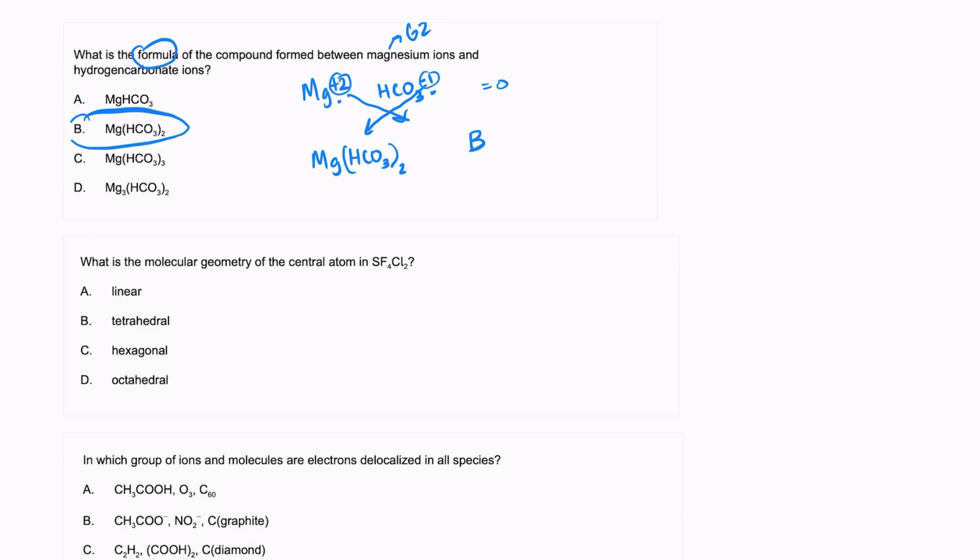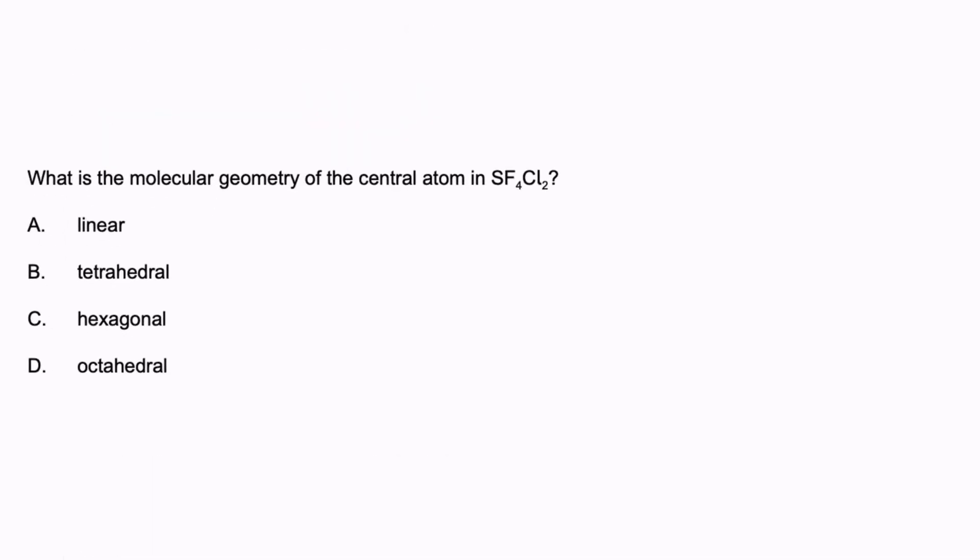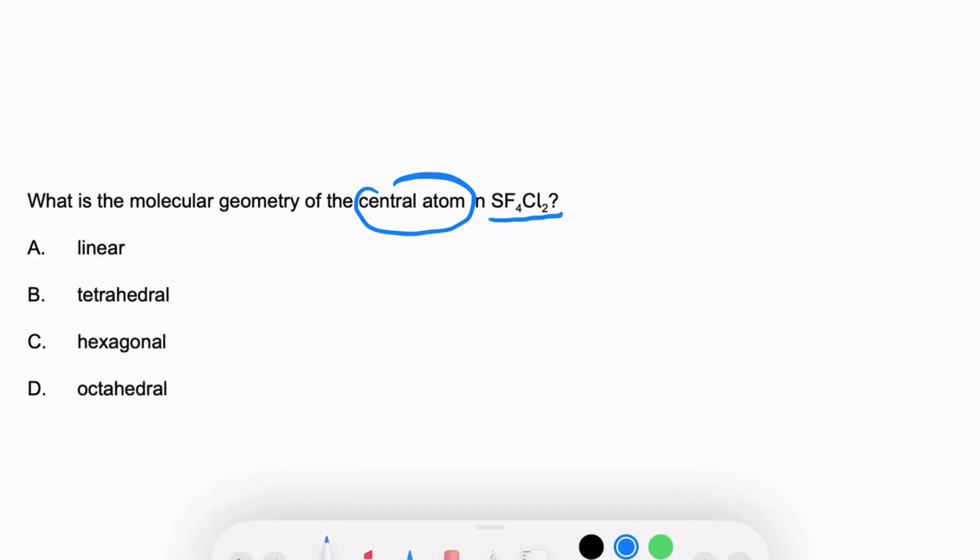Let's look at the next question. It says, what is the molecular geometry of the central atom in SF4Cl2? There's something you need to remember about sulfur, phosphorus, and silicon occasionally - they can form an expanded octet, which means that electrons can move into the d orbital and form an expanded octet around the atom.